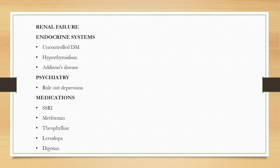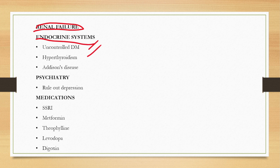Then ask about any renal issues, renal failure, or dialysis. Then endocrine problems, which are very important: uncontrolled diabetes can lead to weight loss, hyperthyroidism can lead to weight loss, and Addison's disease can lead to weight loss.